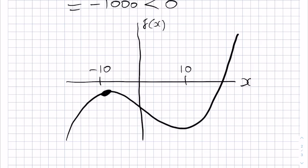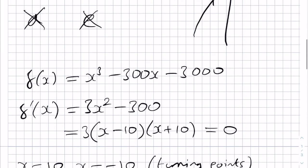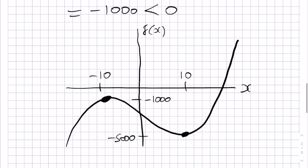Where here we have -10 and -1000. Down here at 10, we have -5000, and we've also used that the y-intercept is -3000, which is down somewhere in between. Therefore, in particular, we can see that this cubic must have only one real root, which is here.